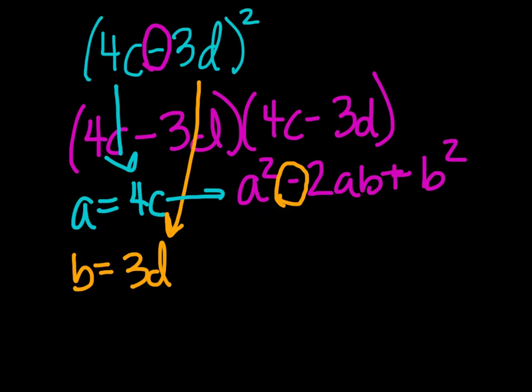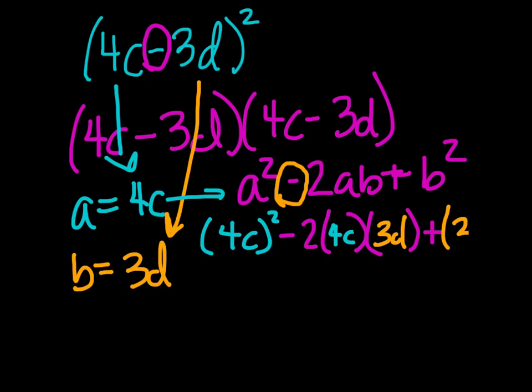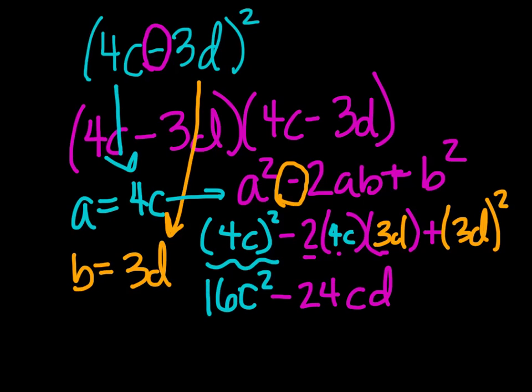We're going to put a's in here. So we have 4c, all of that squared, minus 2 times 4c times our b term, which is 3d, and last plus our b squared term, which is 3d squared. So 4c squared translates into 16c squared. 2 times 4 times 3, or 2 times 4 is 8, times 3 is negative 24, and then cd. And our last term we have 3d squared, so that's really 9d squared. So there we go, final answer, and it's in that a squared minus 2ab plus b squared form.